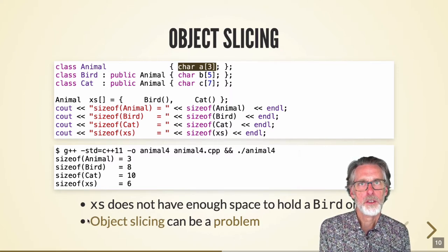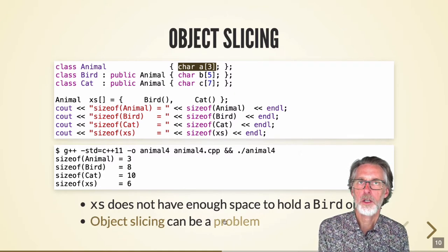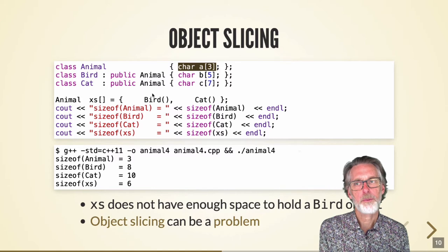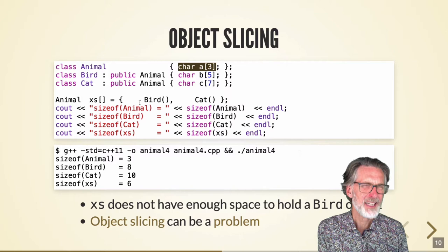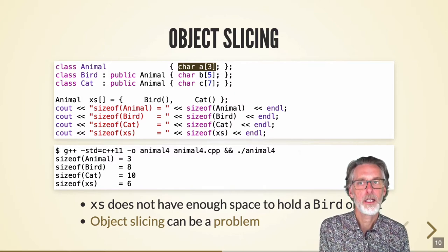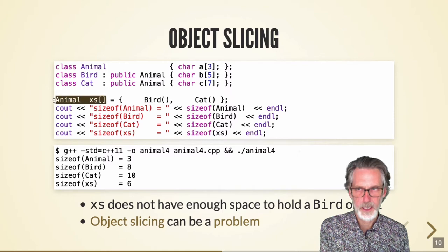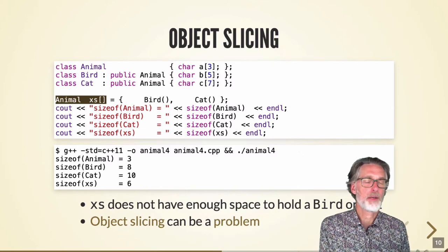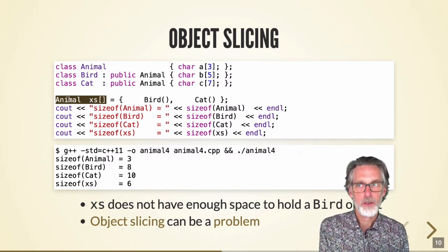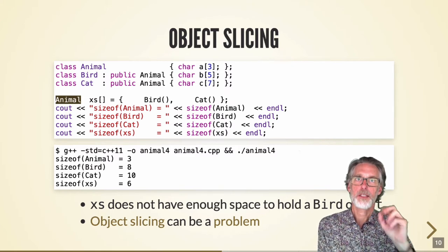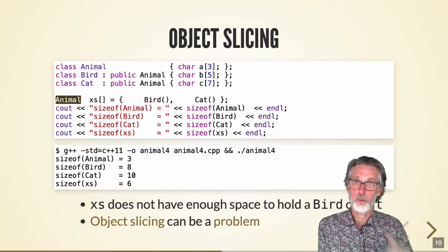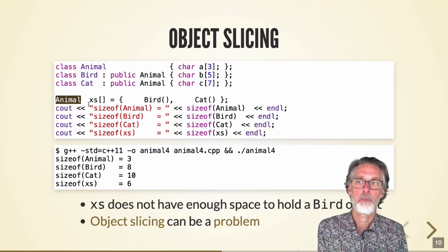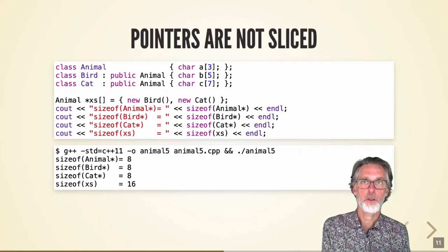This is called object slicing in C++, and it can cause some anomalies. We're just copying part of the bird into the animal variable, not the whole thing. This helps explain why we can't expect dynamic dispatch when we have a value corresponding to an object type — the type of the value tells exactly how much storage is allocated, so we can't possibly do anything dynamic. In order to get around this, we need to use a pointer or a reference.